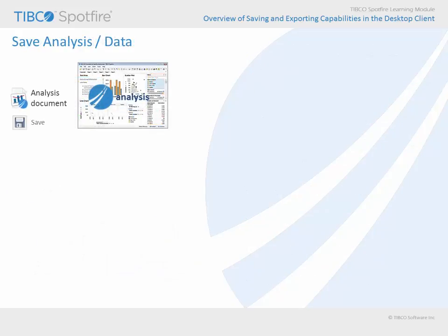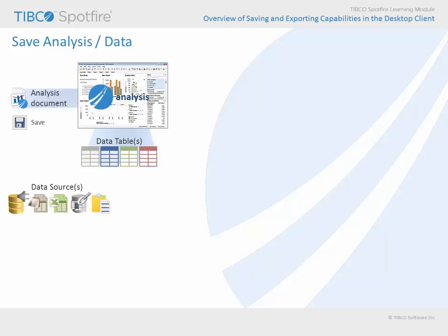As you prepare to save your analysis, it's time to think again about the nature of the analysis document relative to the underlying data table or data tables. Be certain to consider them as separate but integrated items. You will need to understand how each of the data tables in your analysis document is configured relative to the original data source for that data table. Keep in mind that if you used insert columns or insert rows in order to add data to an existing data table, there may be more than one data source supporting a single data table.